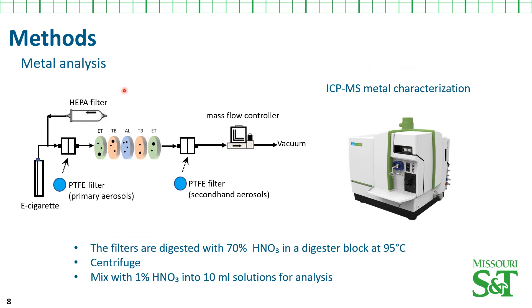Another method is meta-analysis. We also tried direct sampling of secondhand smoke aerosols for meta-analysis. We installed PTFE filters upstream and downstream to collect primary aerosols and secondhand aerosols using our simulated respiratory system. After samples were collected, we digested the filters, centrifuged, and prepared samples for ICP-MS quantification.